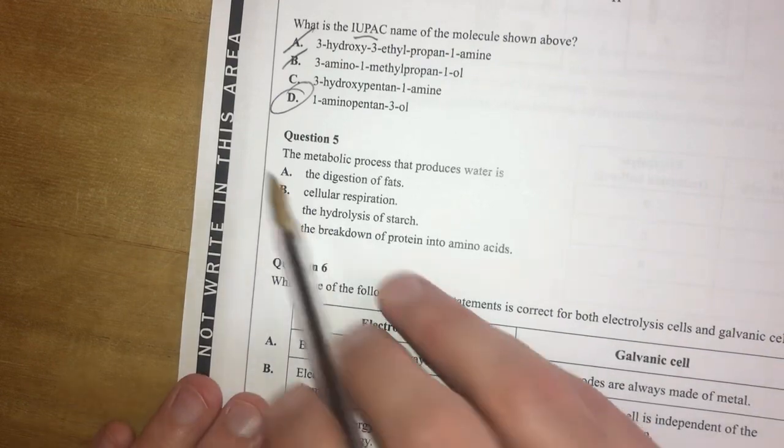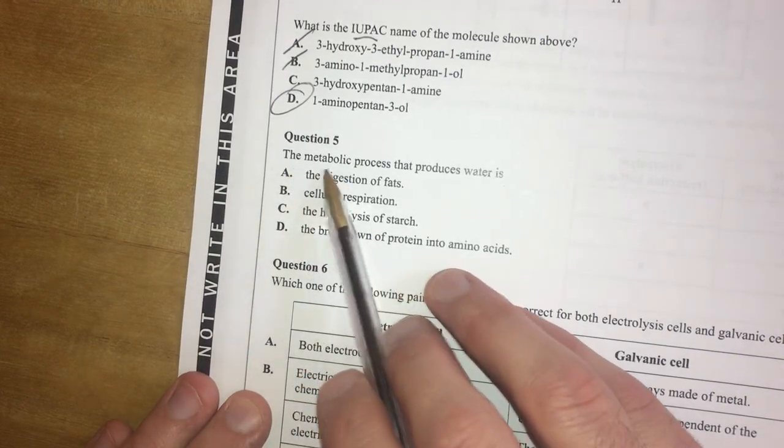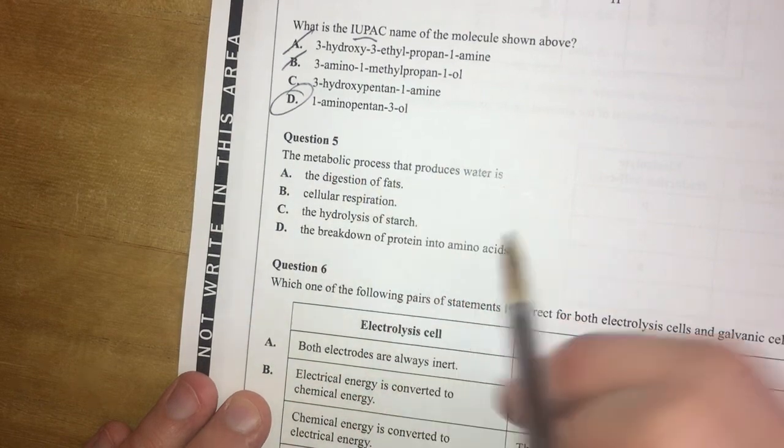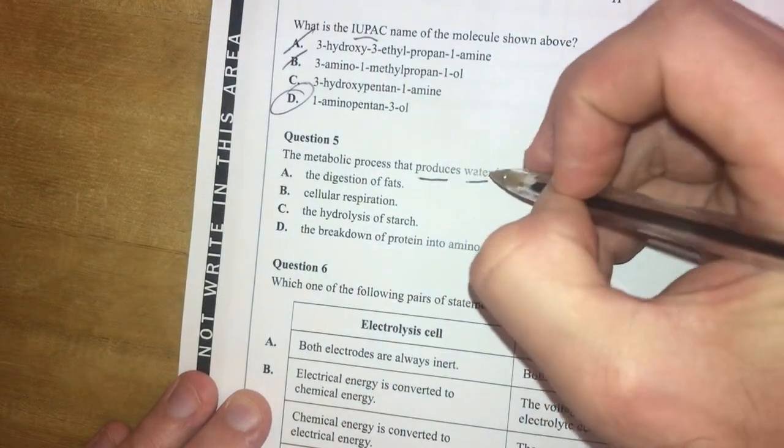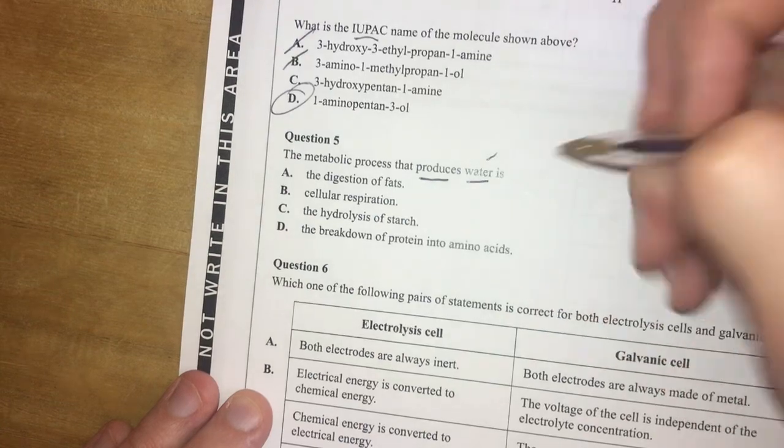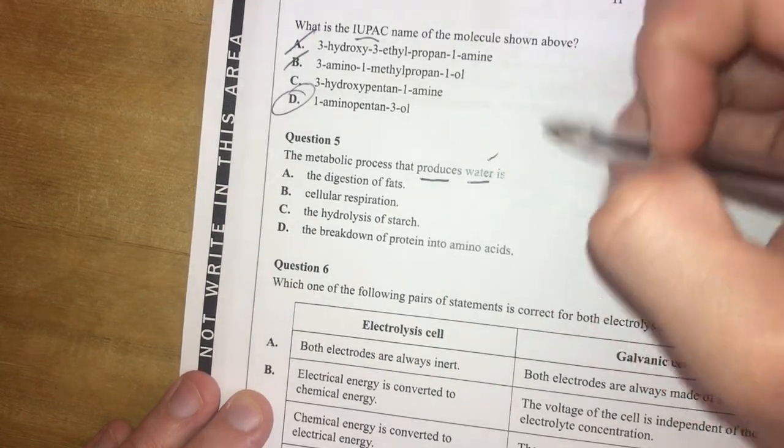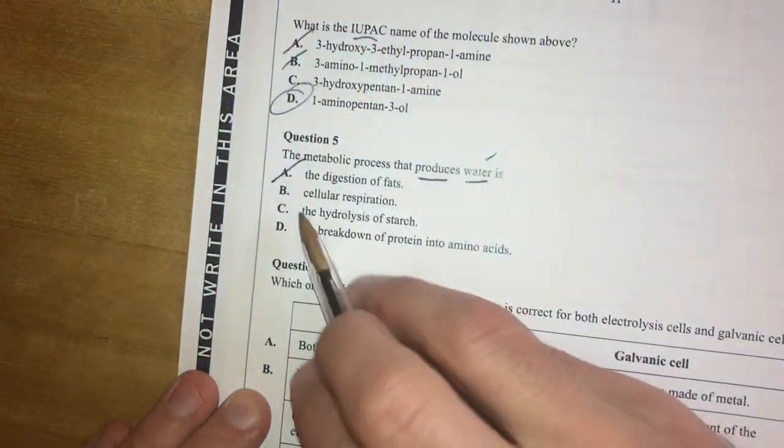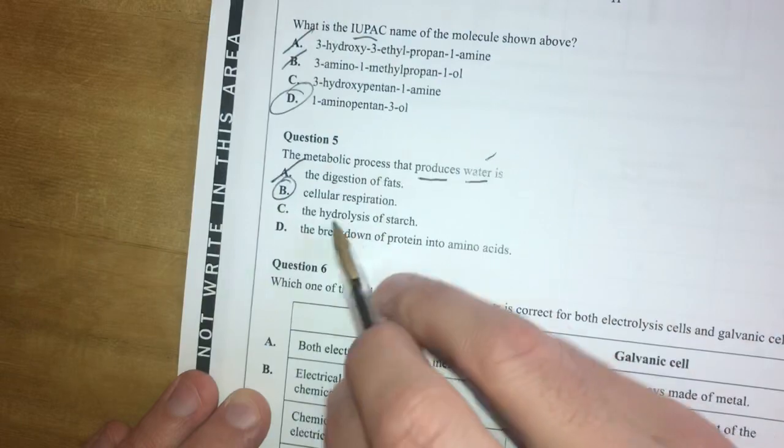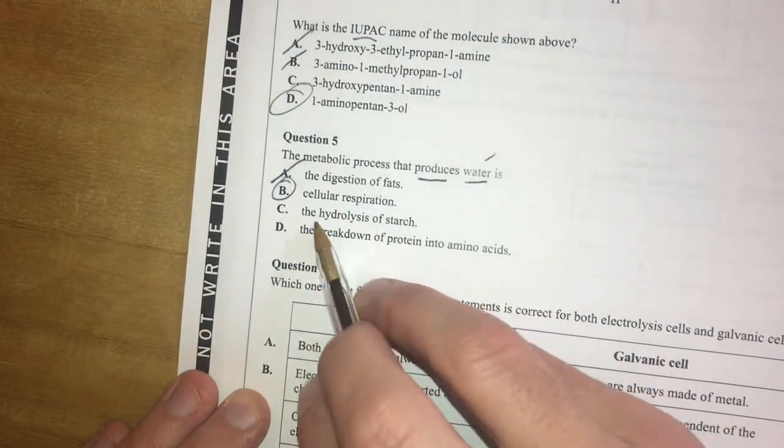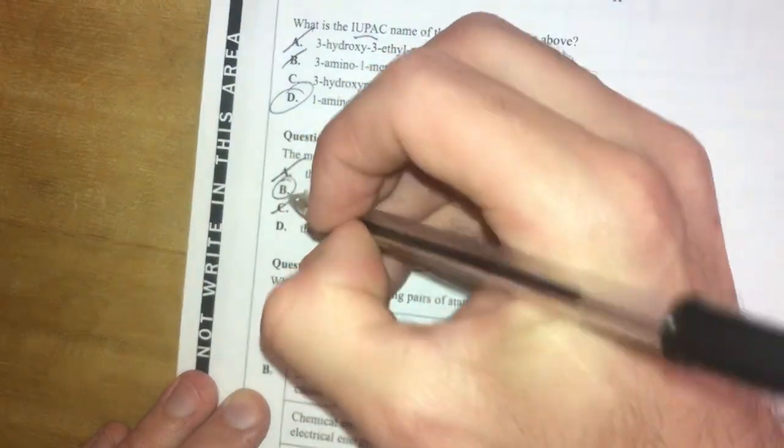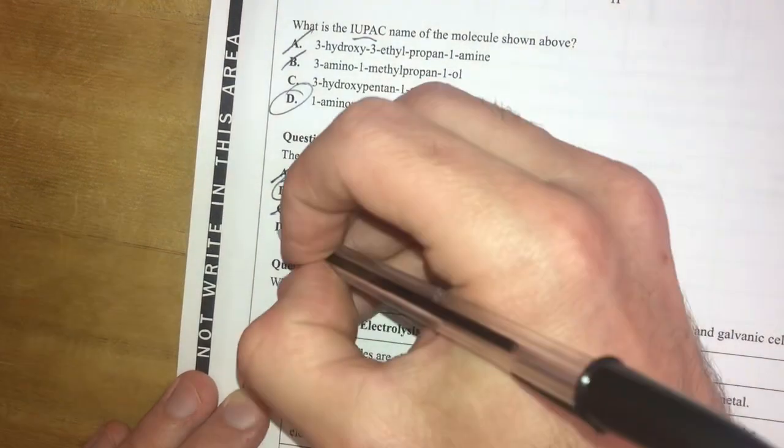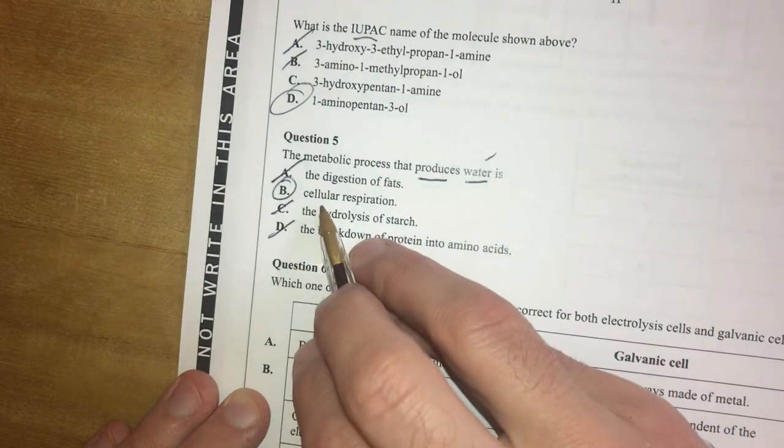Moving on to question five. The metabolic process that produces water. Produces water being a condensation reaction or something that makes water happen. Is what? Digestion of fats. No, that will be a hydrolysis reaction. Cellular respiration is actually going to produce water. Hydrolysis of starch. No, hydrolysis requires water. So it's not going to be that. And the breakdown of protein into amino acids. That, again, is a hydrolysis reaction. So it's not going to be D.